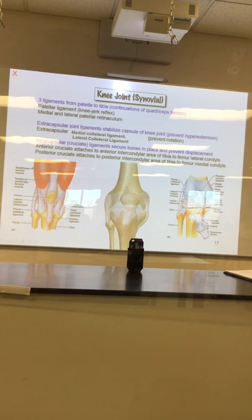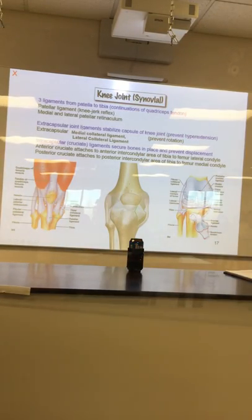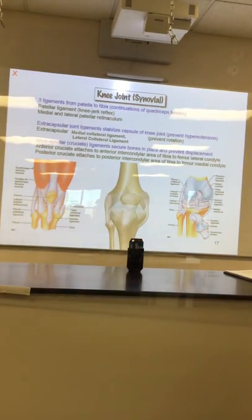The knee can't go side to side because of the collaterals, can't hyperextend because of the PCL, but it must bend. The ACL is a weird one — it comes in right in the middle and connects to the tibial prominence at the top of the tibia.